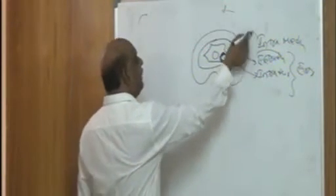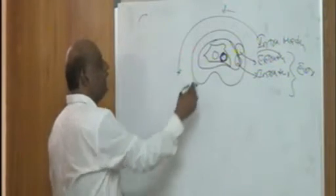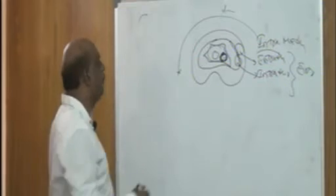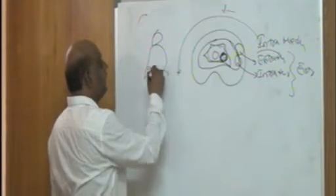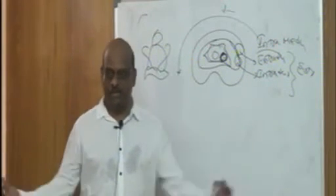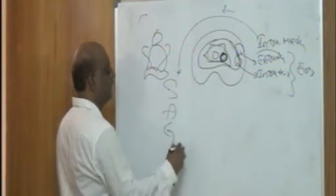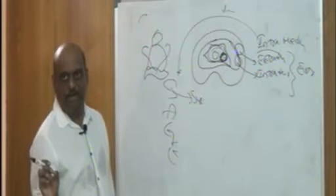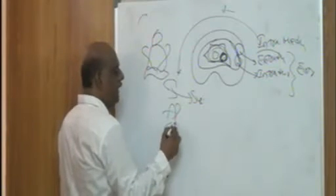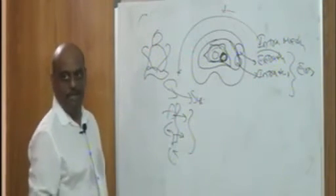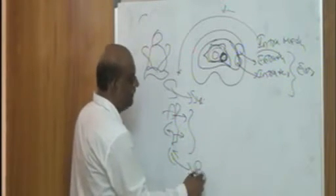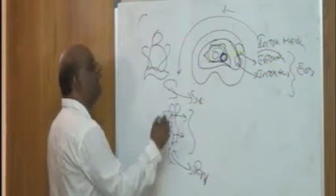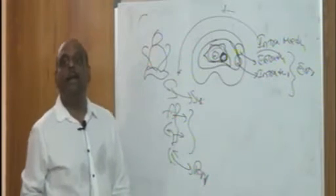For intramedullary lesions, think of it like a cave — a guffa — and remember the mnemonic SAE: S means syringomyelia, a fluid-filled dilatation of the central canal, which is an intramedullary lesion. A is for astrocytoma or glioma. E is for ependymoma. These — syringomyelia, glioma/astrocytoma, and ependymoma — are the key lesions seen at the intramedullary location.